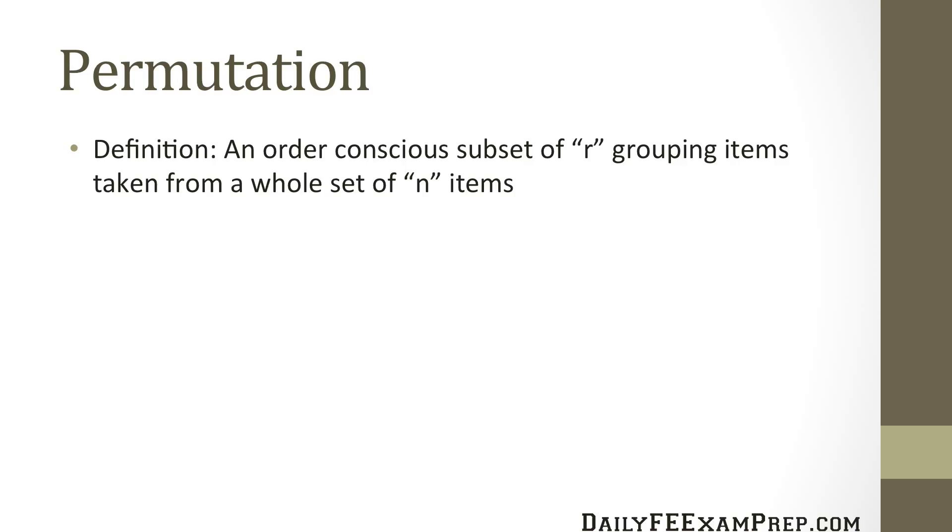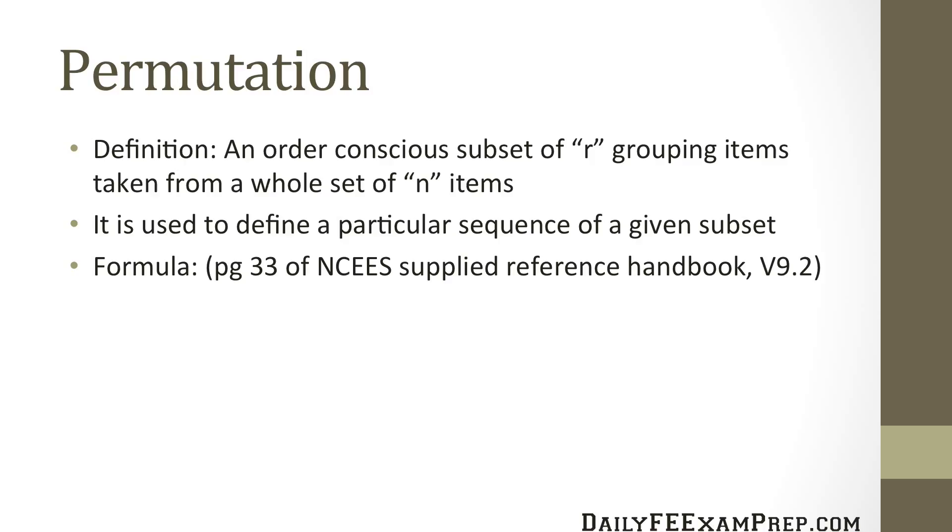The definition of a permutation is an order conscious subset of R grouping items taken from a whole set of N items. That might sound a little confusing, but we'll go through an actual visual example later on. It's used to define a particular sequence of a given subset and the formula can be found on page 33 of the NCEES Supplied Reference Handbook version 9.2. The formula for permutations is given as N factorial divided by N minus R factorial.